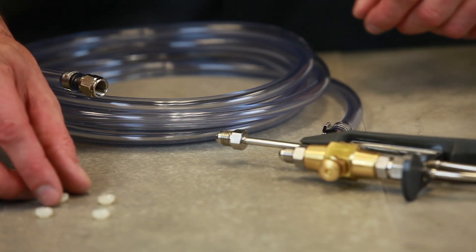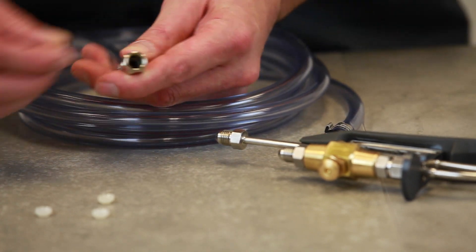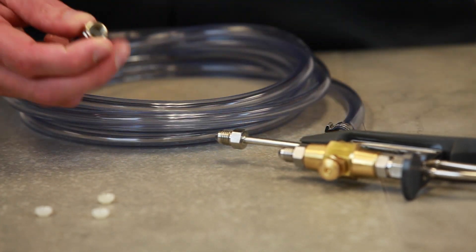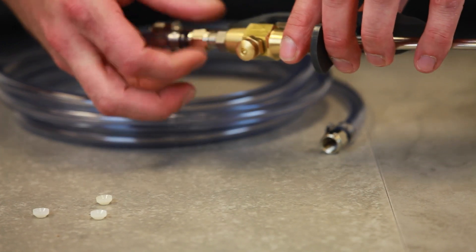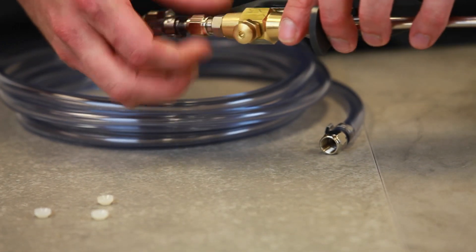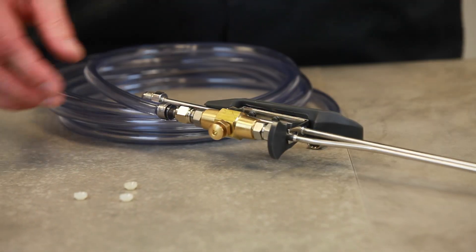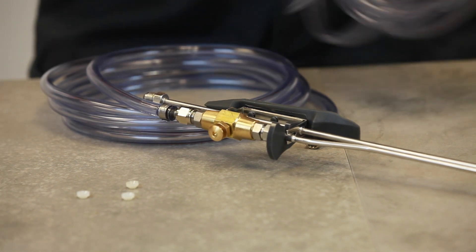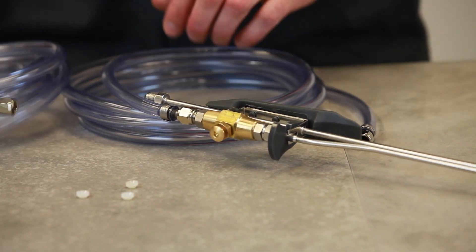To assemble the Last Straw, first take one of the included gaskets and place it inside the swivel nut on the CO2 supply tubing assembly. Hand tighten, we'll get with the wrench later. Repeat that same process with the supplied liquid assembly.